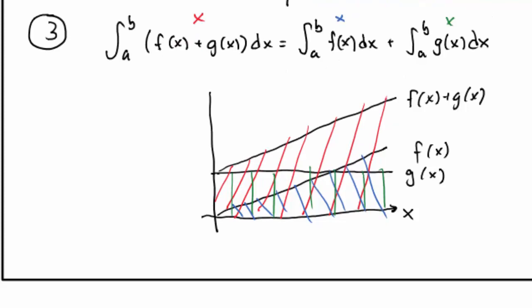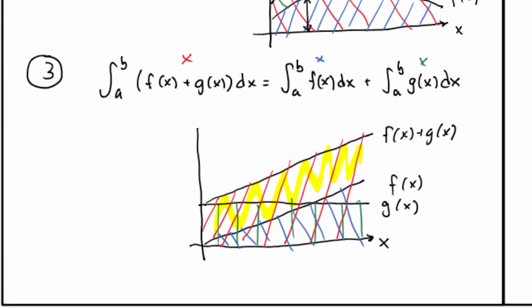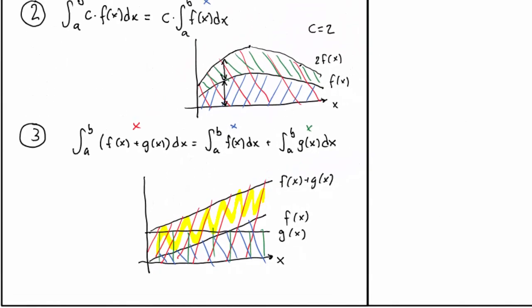which is what this result says. If you don't see it, just note that this yellow area right here, between f and f plus g, well that yellow area must be exactly the same as the green area, the one under g. And it is clear from the graph that the blue plus the yellow is the red.